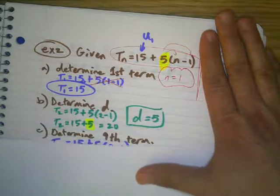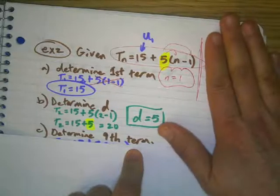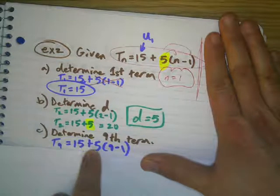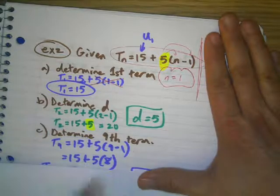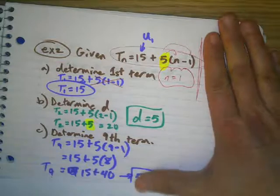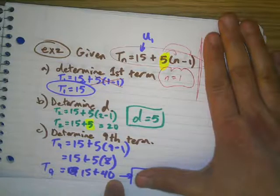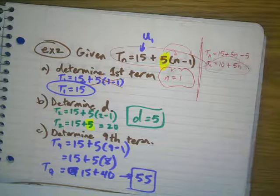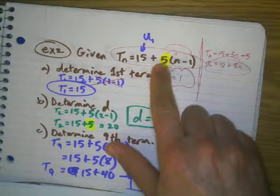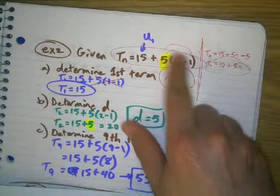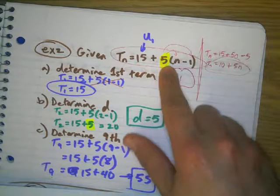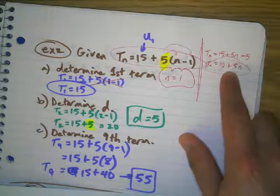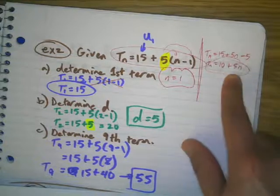Now if they say find the 9th term, you just plug in 9 for n. So 15 plus 5 times 9 minus 1 — 9 minus 1 is 8, and 5 times 8 is 40, and 15 plus 40 gives me 55. They may also ask you to rearrange using the distributive property with the 5, giving 15 plus 5n minus 5, and then 15 minus 5 gives 10 plus 5n. This is another way to rearrange the equation.